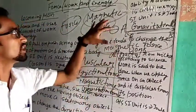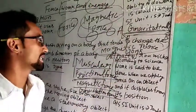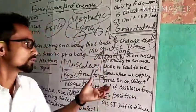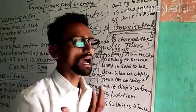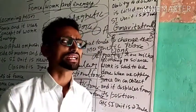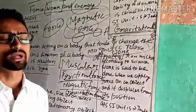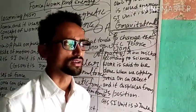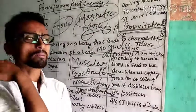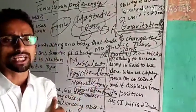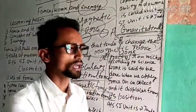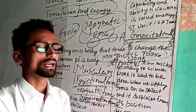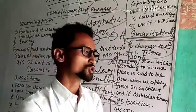Now talking about another topic of this chapter — work. I have already told you that work means when we apply force on an object and it is displaced from its position, then according to science, work is done. The SI unit of work is Joule.